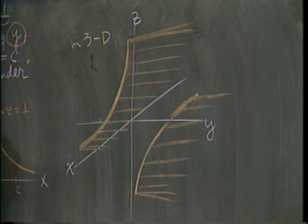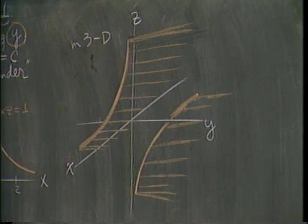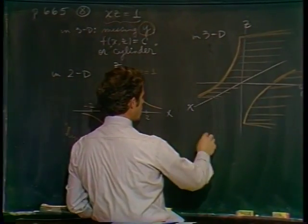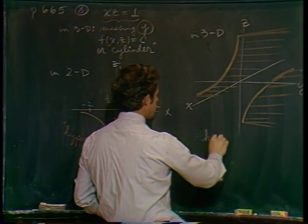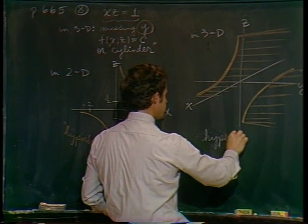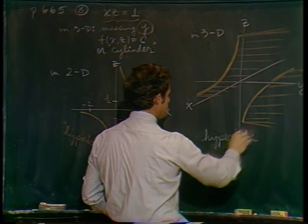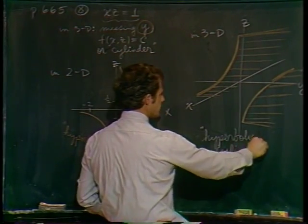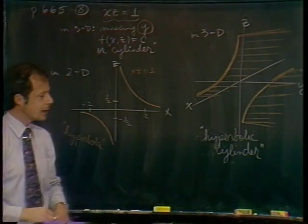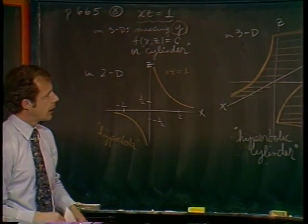So you actually have two sheets to your surface. And if you wanted to give it a name, I guess you'd call it a hyperbolic cylinder, or a hyperbolic cylindrical surface. That's a mouthful.